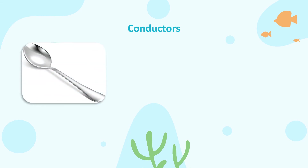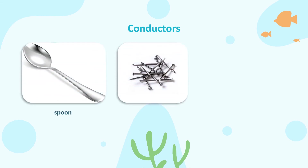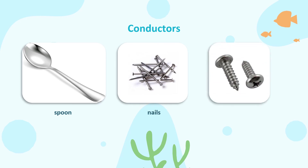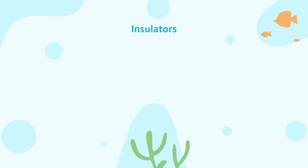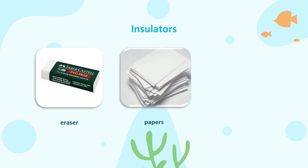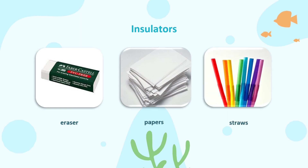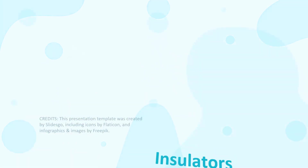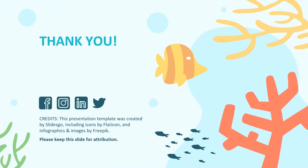Now let us look at some examples of conductors: spoon, nail, and screw. These are examples of insulators. That's all for our lesson today. Have a great day, bye bye!